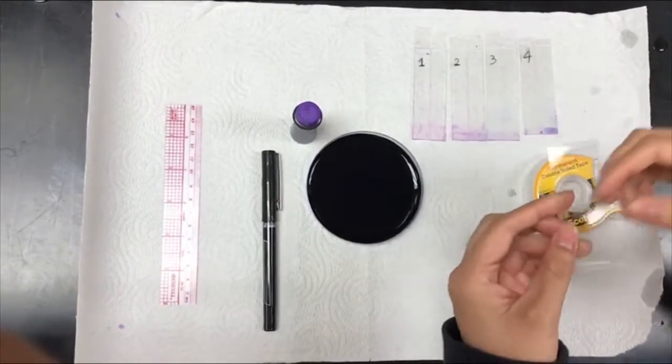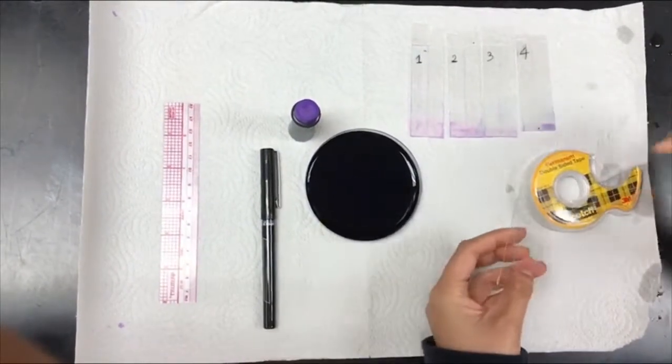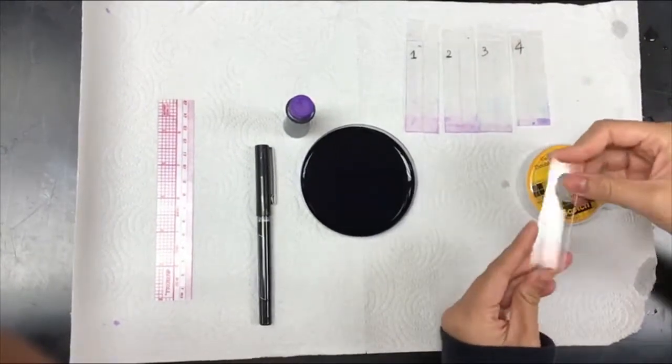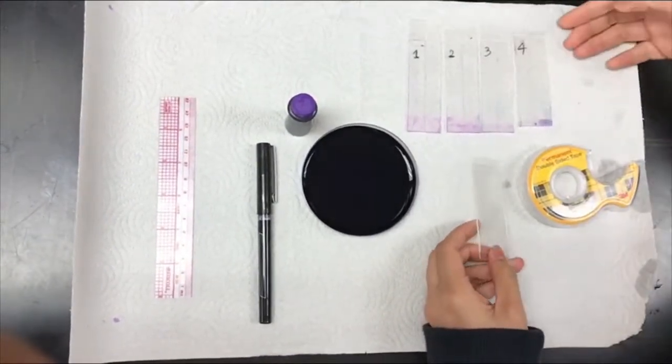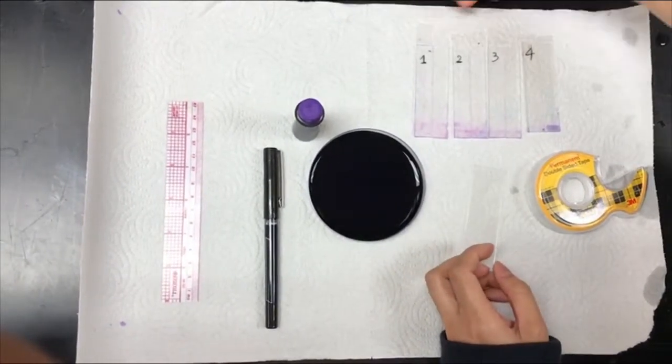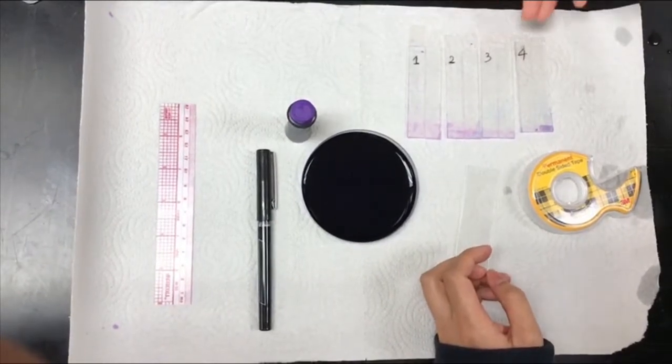The different thickness of the microchannel depends on the number of layers of the double-sided tap that I'm gonna use. So in the experiment, I will have four different samples at four different thicknesses. The first sample has one layer of the tap, two layers, three layers, and four layers.